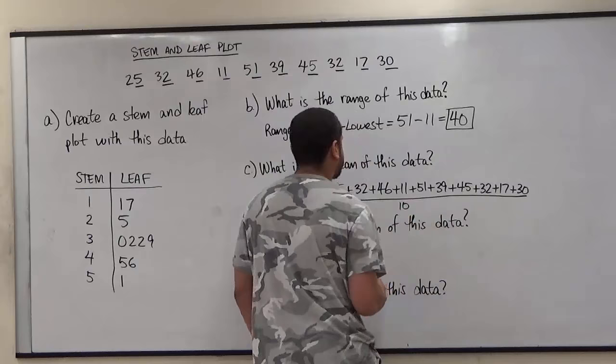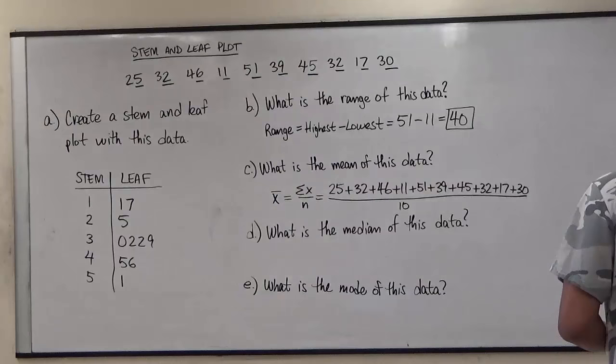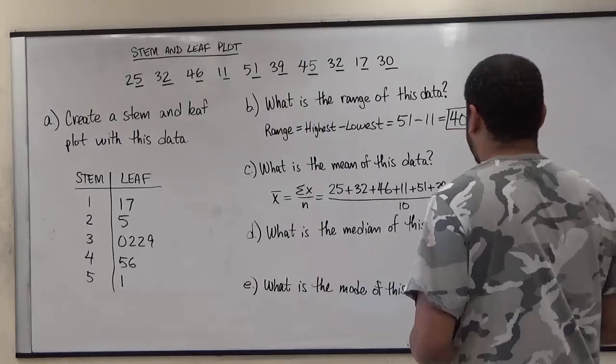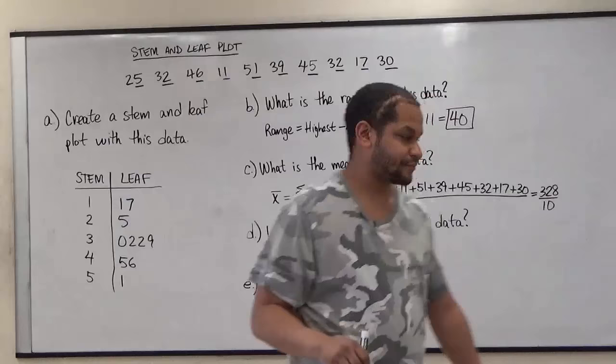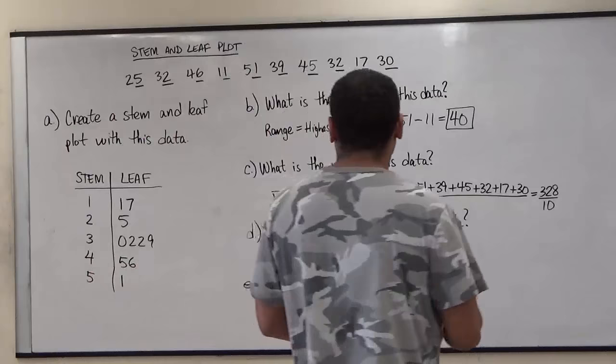When we sum up these values, we have ten values and the sum of all these digits are going to give us three hundred and twenty-eight, and we're dividing that by ten. So now when we take the sum of these, let me just double check on a calculator to make sure our sum is correct.